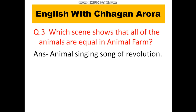Which scene shows that all of the animals are equal in Animal Farm? The scene in which the animals sing the song of revolution — from that scene it becomes clear that all animals are equal.